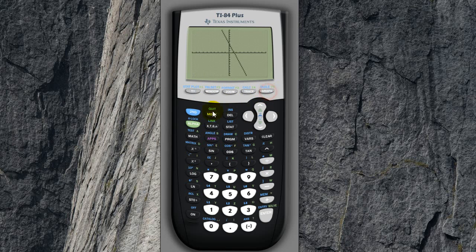In my graph, if I put in second, trace, then value, and put in a number outside of negative 10, let's say negative 15, it will come up with an error message.